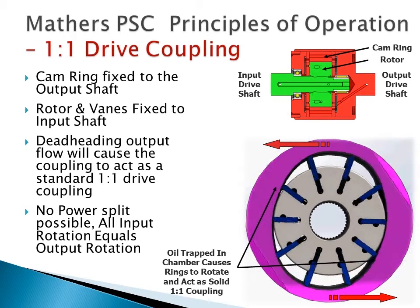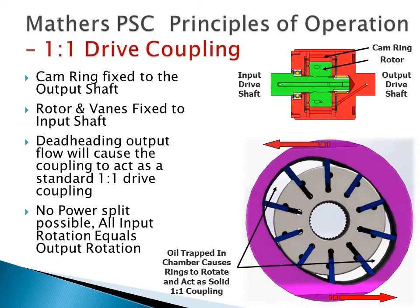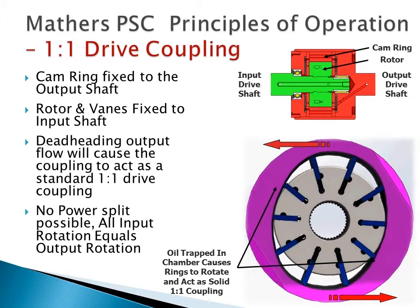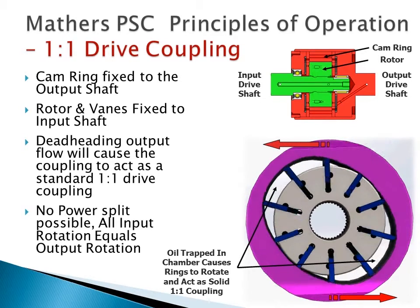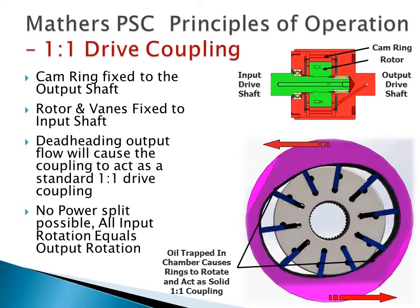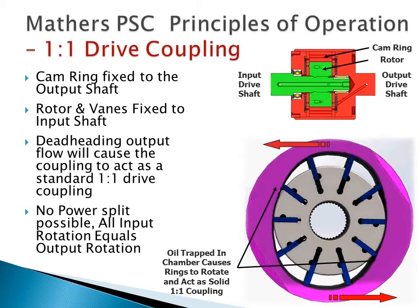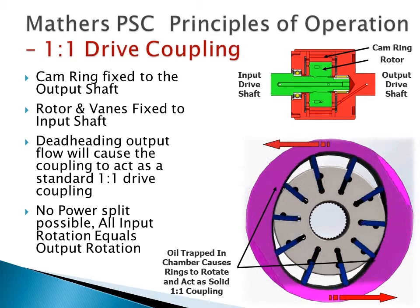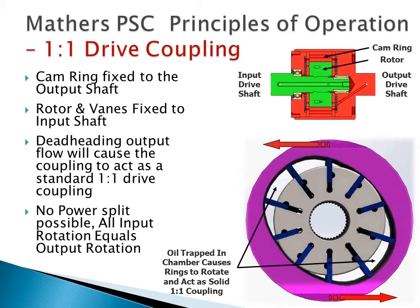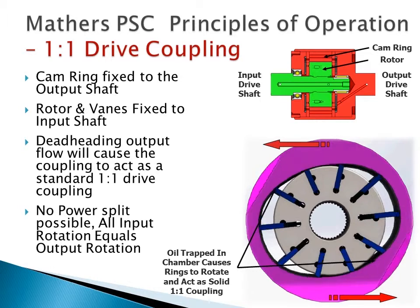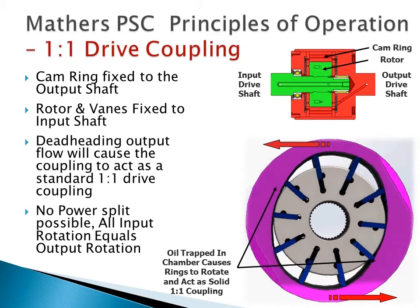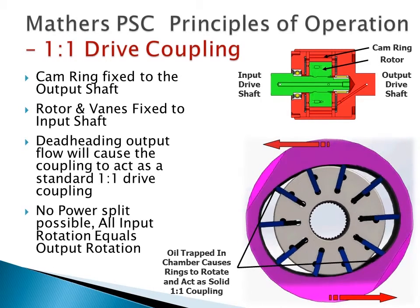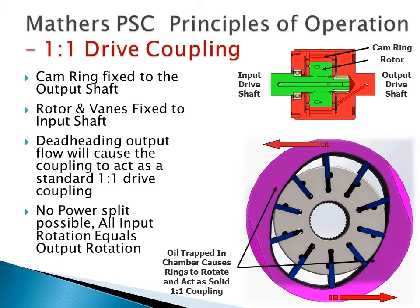This is illustrated in the sectional view of the coupling in the top right of the slide. The input shaft assembly is shown in green, which includes the input shaft, the rotor and the vanes. The output shaft assembly is shown in red, which includes the cam ring and the output shaft, which are fixed together.